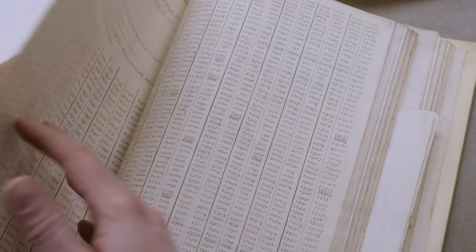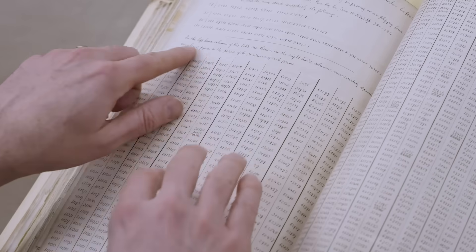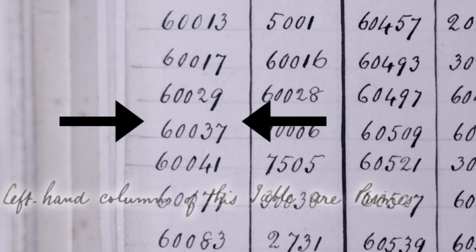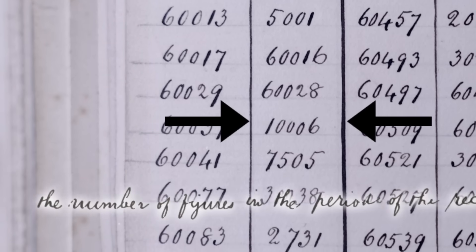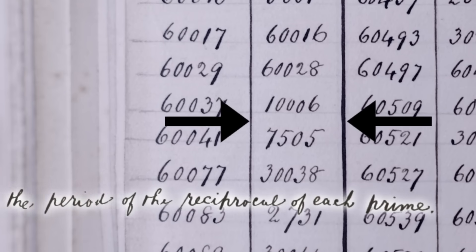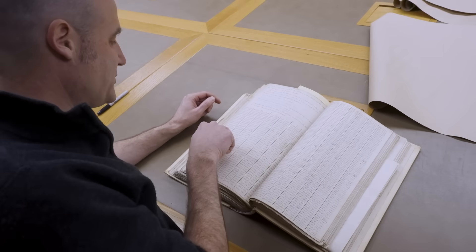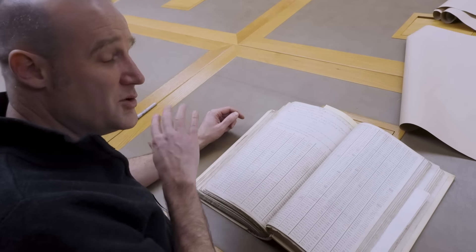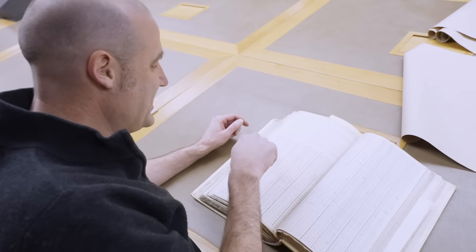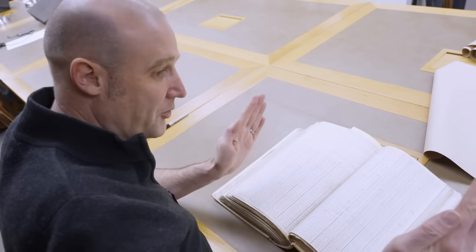And then here's what he found. In the left-hand columns of this table are primes. These are the prime numbers down here. In the right-hand columns is the number of figures in the period of the reciprocal of each prime. So what he's done is he's taken each prime number, he's computed 1 over that prime number, and then worked out how many digits before it repeats.